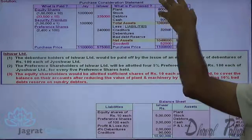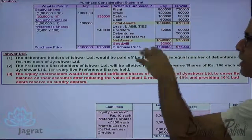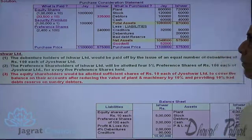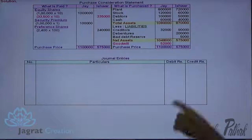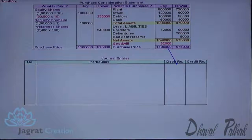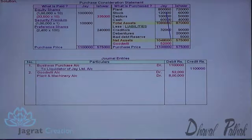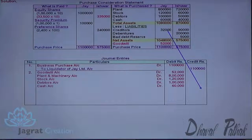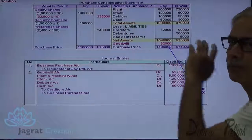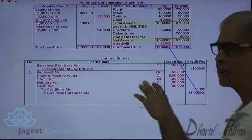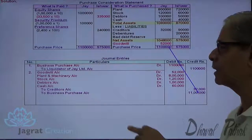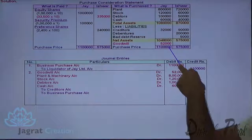After this purchase consideration and net assets are worked out, I want to write down the journal entries in the books of purchaser Jai Ishwar Limited. Business purchase account debit to liquidator of Jai Limited account credit. Payment made for goodwill is 52,000: goodwill account debit, plant account debit, stock account debit, debtors account debit, cash account debit. Creditors account credit to business purchase account credit. Individual assets are debited, liabilities are credited. Difference between assets and liabilities is credited to business purchase account. This is how business purchase account gets closed.